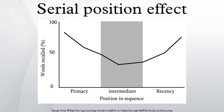Another factor, called the conditional response probability, represents the likelihood that a recall of a certain serial position lag was made. A graph of serial position lag versus conditional response probability reveals that the next item recalled minimizes absolute lag, with a higher likelihood for the adjacent item rather than the previous one.